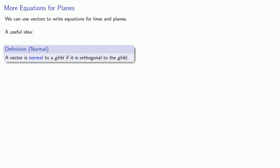We can use vectors to write equations for lines and planes. Here's a useful idea: A vector is normal to a glurbal if it is orthogonal to the glurbal. What's a glurbal, you ask?